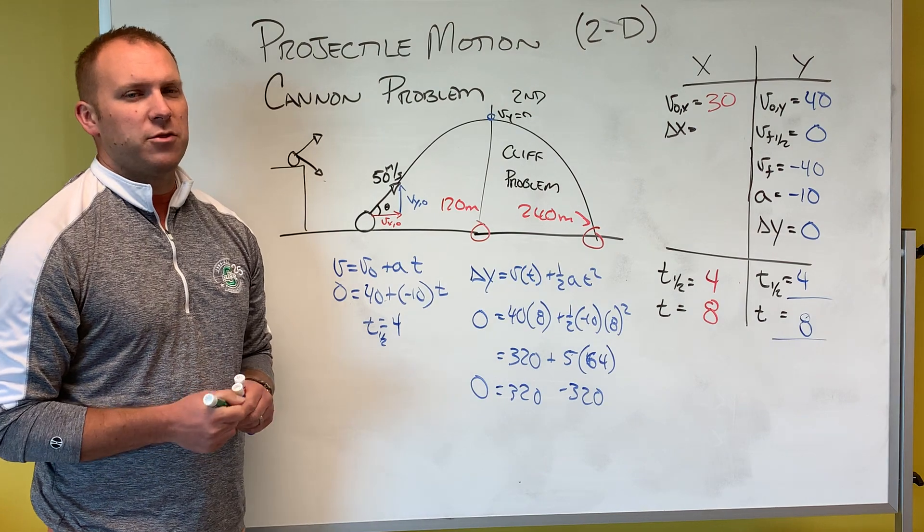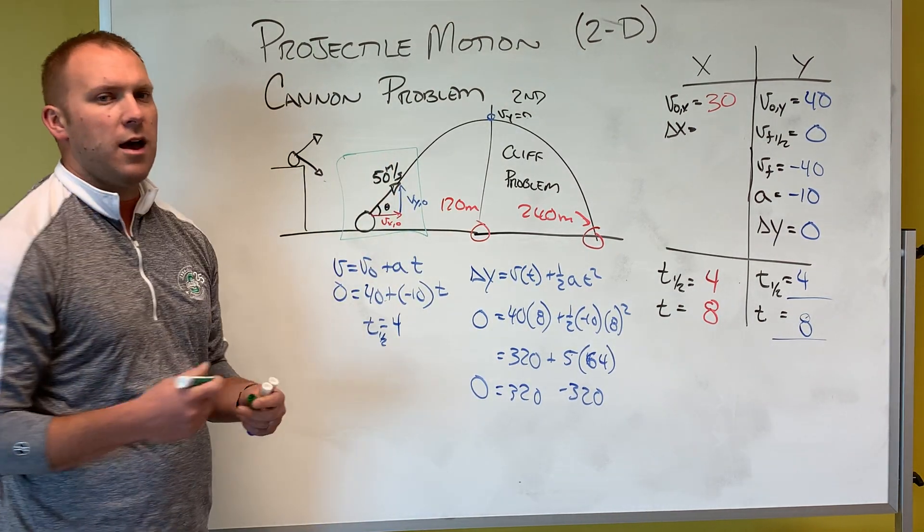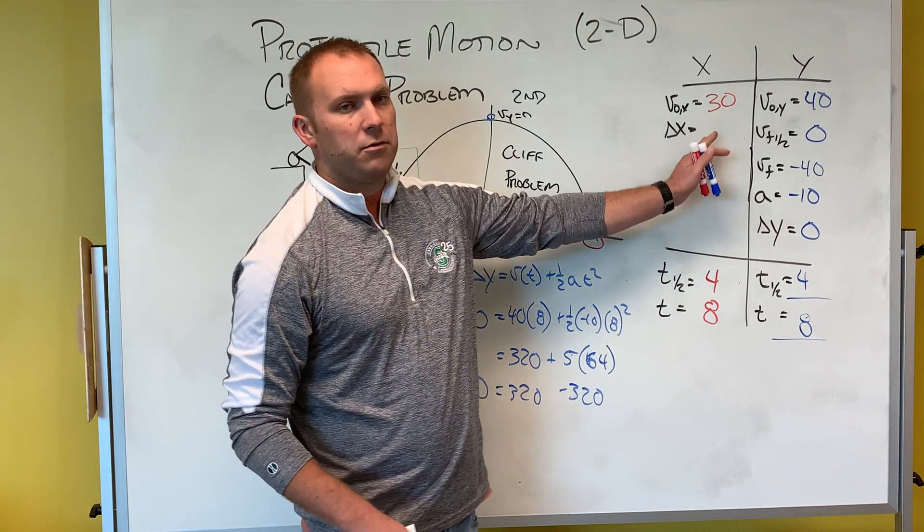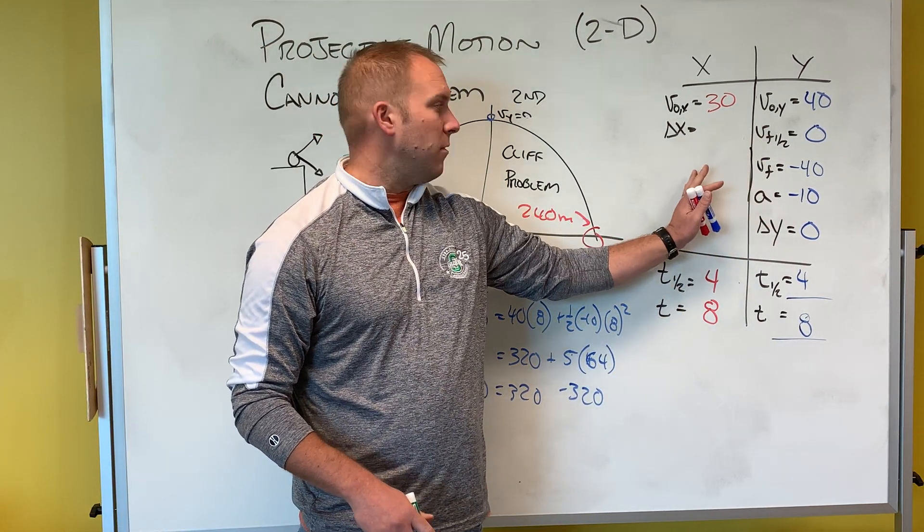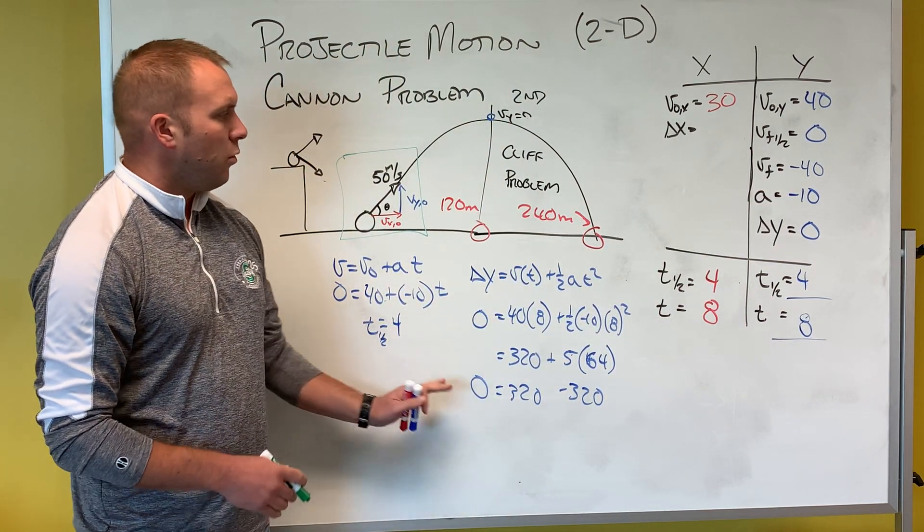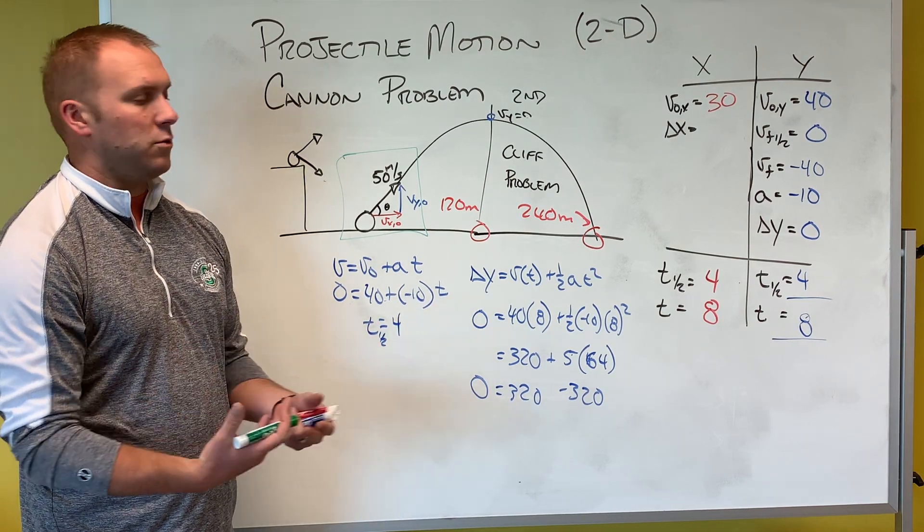The main steps we have to make sure that we're doing is one, breaking our initial velocity into its x and y components. Once we do that, we can then figure out what each x values and my y values would be, and then understanding which equations I would plug in to be able to find something that I can then use.